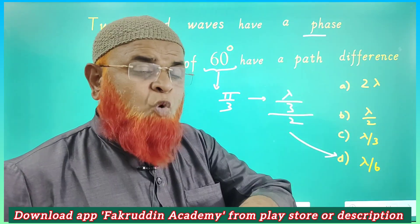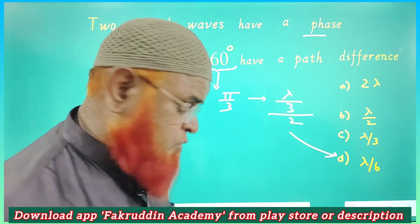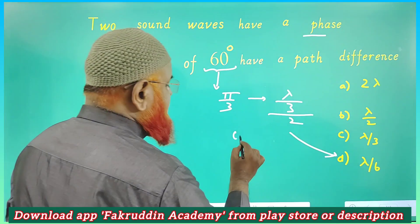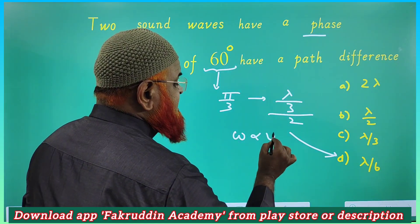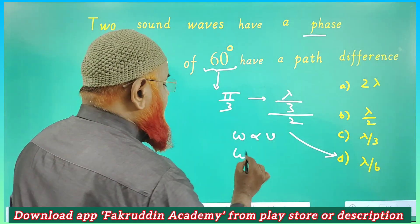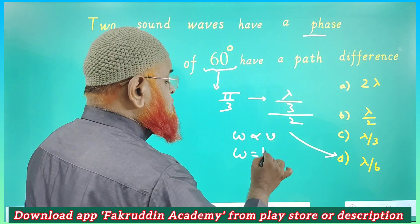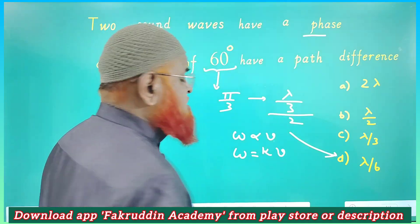Now you should know one thing - that angular velocity is directly proportional to linear velocity. Angular velocity is equal to k times linear velocity. Whenever you remove the proportionality, you will get a constant k here.